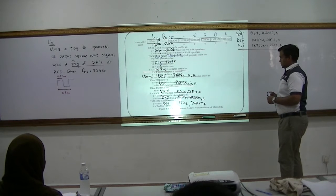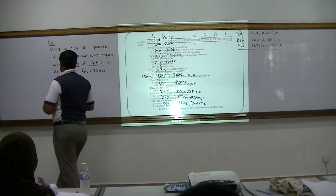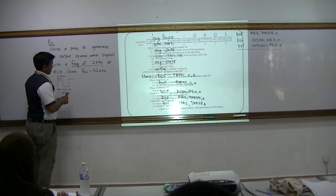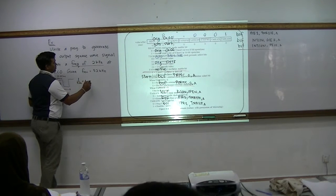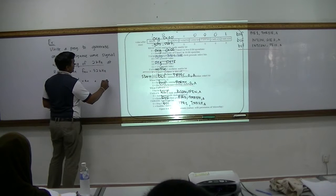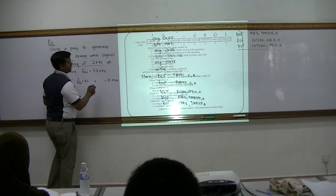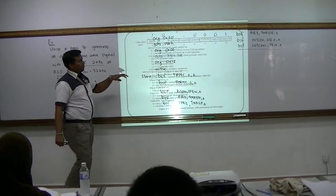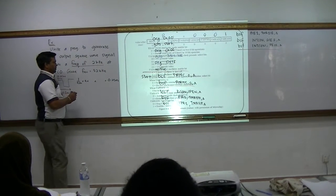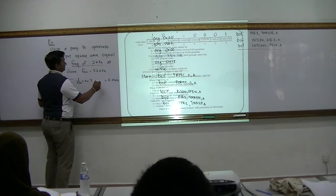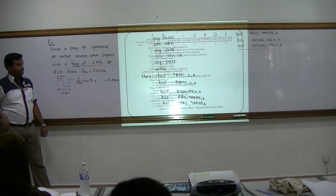Now we have to select the prescaler. For the prescaler, we apply the same formula: 1 over 32k times 4 times prescaler times timer count equals 0.25. Which prescaler do you want to choose? For Timer 1 you only have 1, 2, 4, or 8. Which one do you want? Choose 8. How many counts of clock cycles do you need?